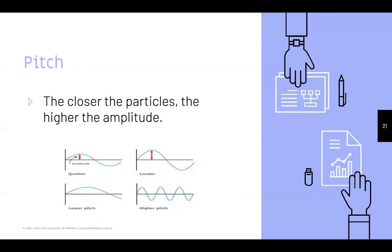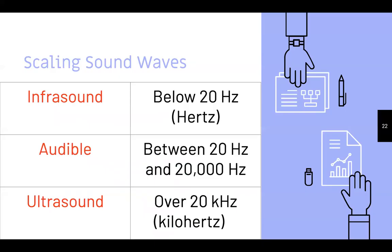Scaling sound waves: hertz is the unit we measure sound waves in. We have infrasound, which is below 20 Hz; audible sound, which is between 20 Hz and 20,000 Hz; and ultrasound, which is over 20,000 Hz. That's how we would scale sound.